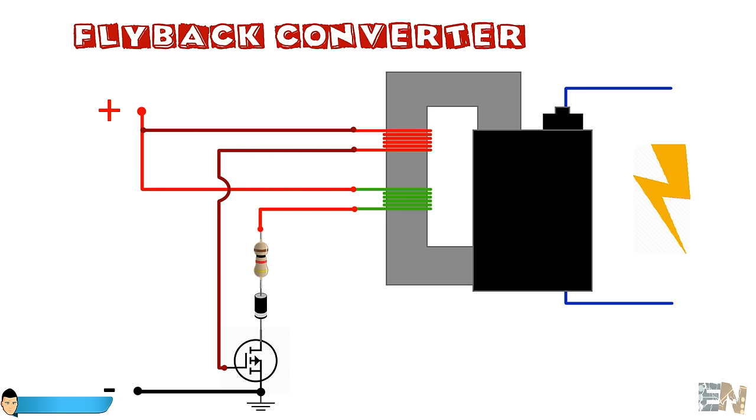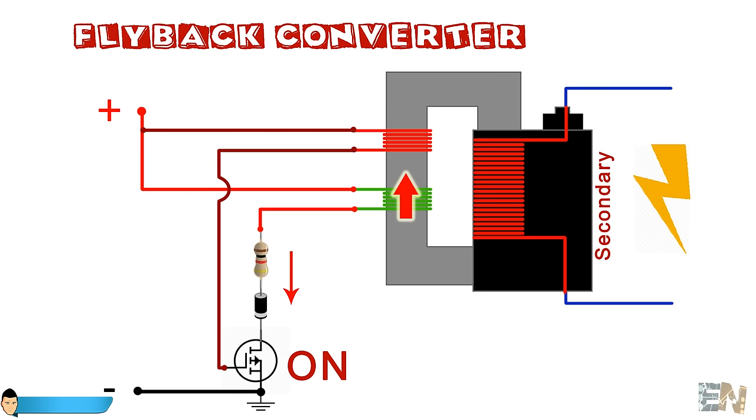When the switching transistor is turned on in a flyback converter, the primary winding of the transformer is energized, as we talked about earlier in the inductor properties, and no energy is transferred to the secondary windings. When the transistor is turned off, the field collapses, and all the energy is transferred to the secondary windings. This differs from a forward-wire converter topology, where energy is transferred to the secondary windings when the switching transistor is turned on.